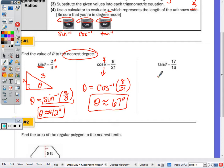Last one: tangent of theta is 17 over 16, so theta is equal to the inverse tangent. I know the ratio, the calculator is going to tell me the angle. So inverse tan of 17 over 16 is approximately 47 degrees.